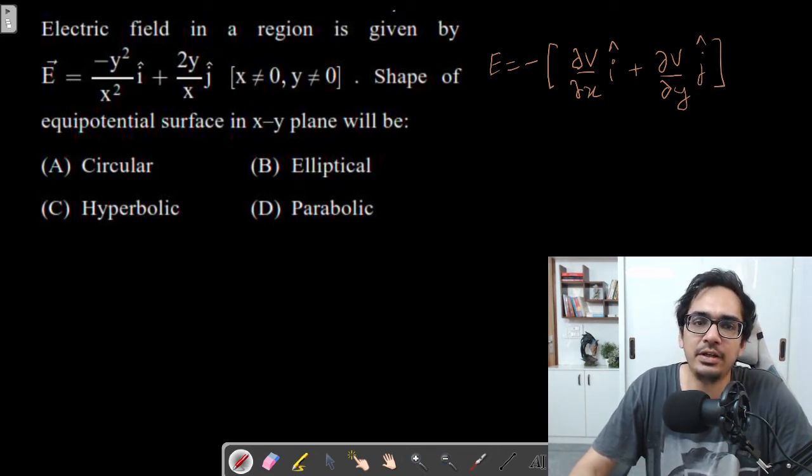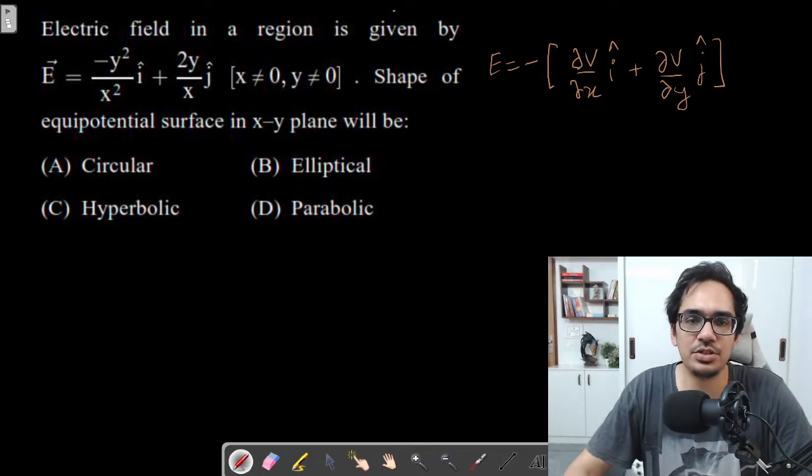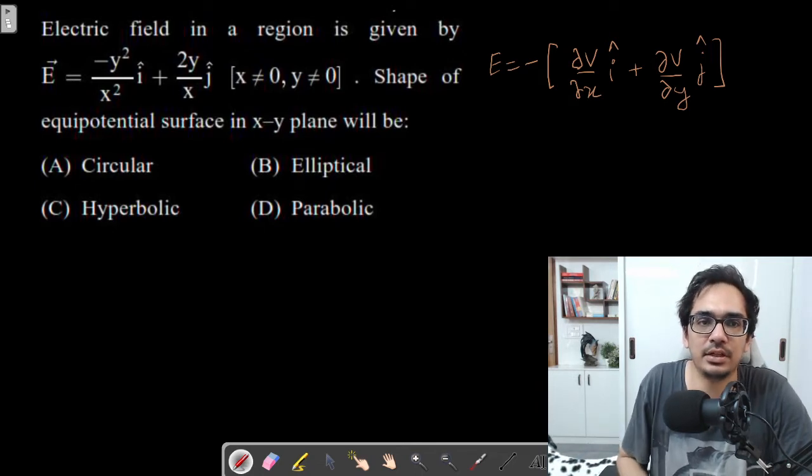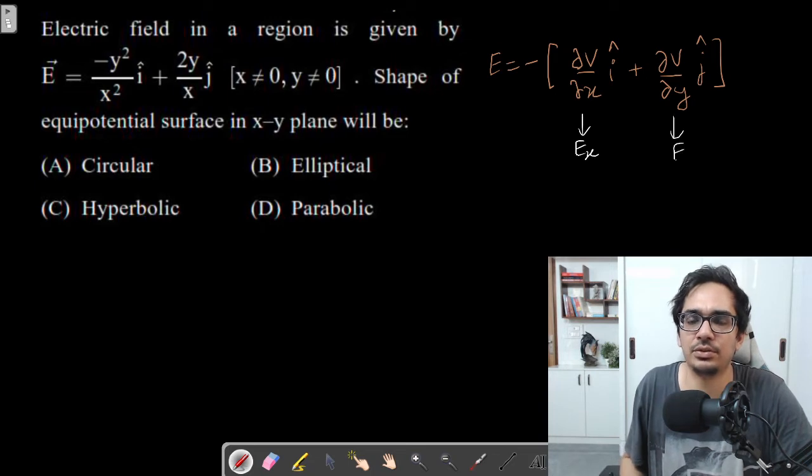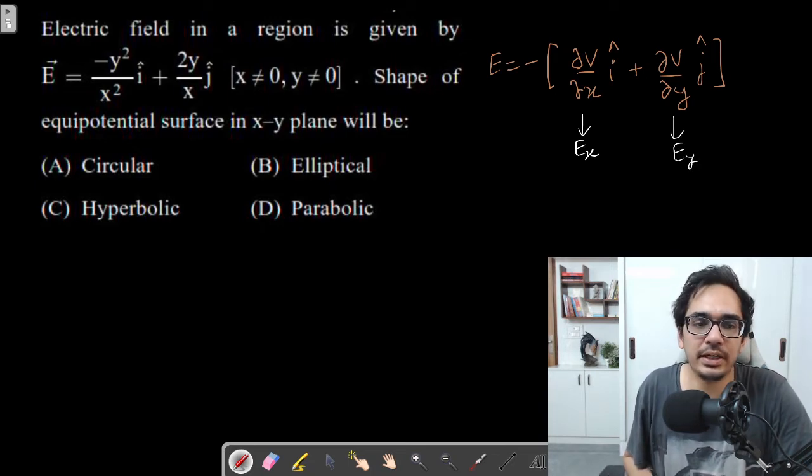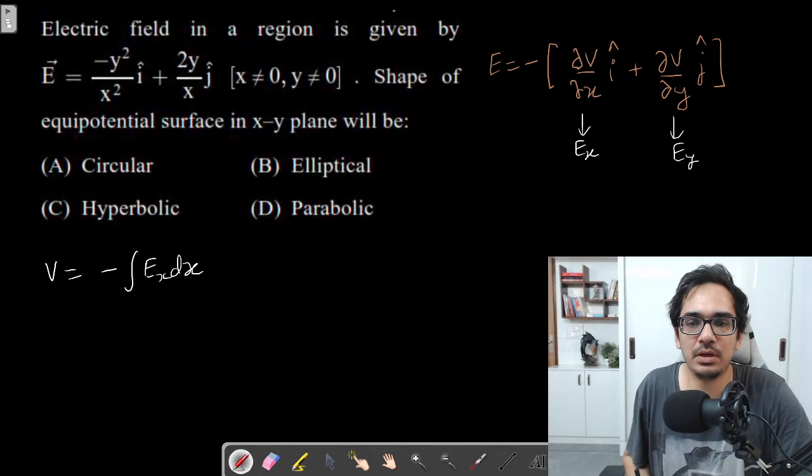Now electric field vector is given and we have to find the potential. The trick is this part is Ex and this part represents Ey with the minus sign. You can get V either by using minus integral Ex dx or minus integral Ey dy. Both will give you the same result.